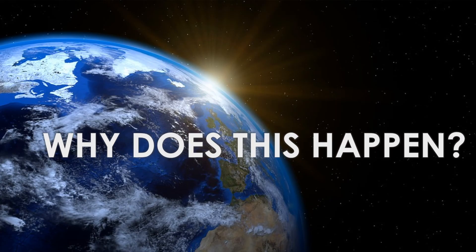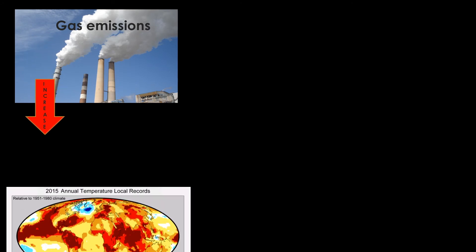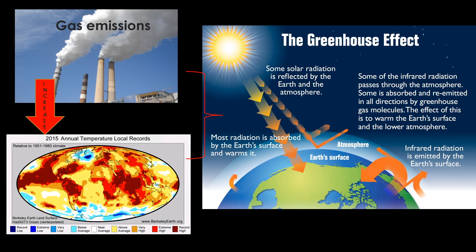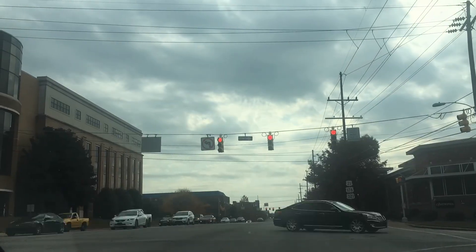So why does this happen? Gases in the atmosphere increase the average heat on Earth, which causes the greenhouse effect, where solar radiation is reflected and most of it is absorbed by the Earth's surface, which warms it. However, some of the radiation is absorbed in the atmosphere by the greenhouse gases and re-emitted in all directions, warming again the Earth's surface.